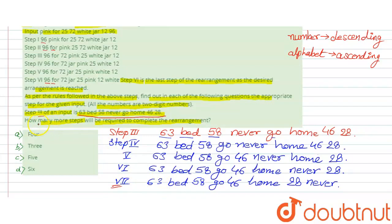We were asked how many more steps will be required. We were given step 3, and we needed steps 4, 5, 6, and 7. So we need 4 steps to complete the rearrangement. Option A is our answer. Thank you.